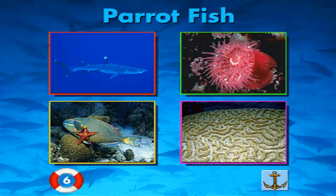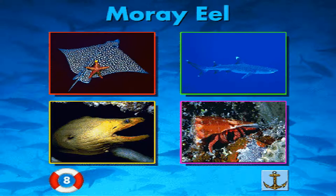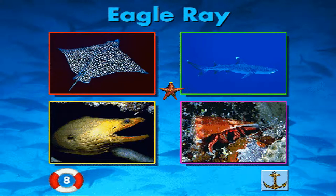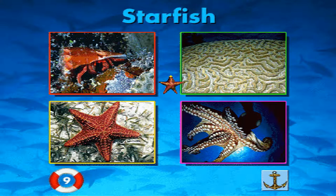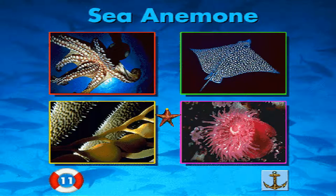I'm a parrotfish. You're right. I'm a parrotfish. I'm a moray eel. Can you find me? You're right. I'm a moray eel. You're doing great. I'm an eagle ray. Can you find me? You're right. I'm an eagle ray. I'm a starfish. I'm a sponge. Can you find me? You're right. I'm a sea anemone. Can you find me? Congratulations. You got them all right.